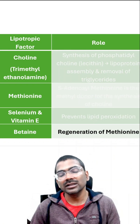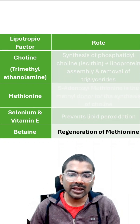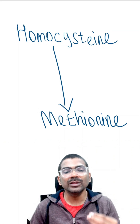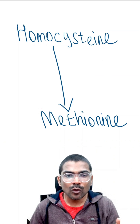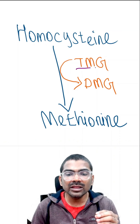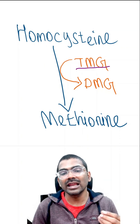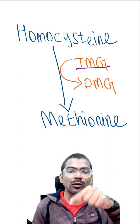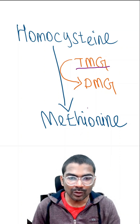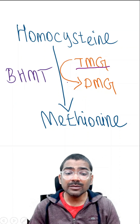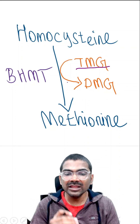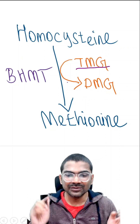Betaine is another methyl donor. It regenerates methionine from homocysteine. Betaine is nothing but trimethylglycine, so one methyl group is given to homocysteine to produce methionine. The enzyme is betaine homocysteine methyl transferase.